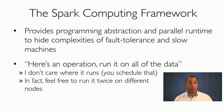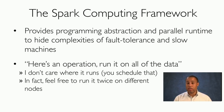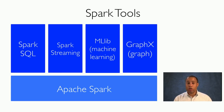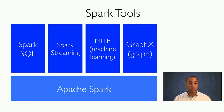The Spark computing framework provides programming abstractions and a parallel runtime that hides the complexities of fault tolerance and slow machines. A programmer only has to say "here's an operation, run it on all of the data" — they don't worry about where it runs, slow nodes, or failed nodes; Spark automatically runs it multiple times and guarantees the correct result. The Spark framework consists of four components: the core Apache Spark component, along with Spark SQL, Spark Streaming, the ML Machine Learning Library, and the GraphX Graphical Computing Library.